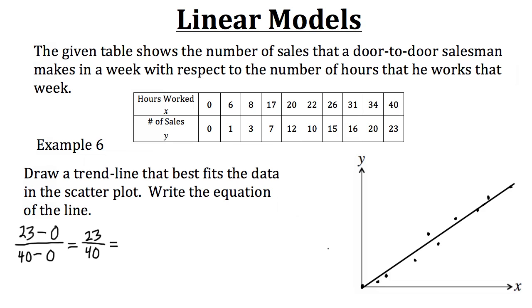Now a lot of times when working with scatter plots and trend lines, you're going to get an equation for a line that probably isn't going to work out very nicely. So for example, this 23 over 40, it's kind of a crazy looking slope. So let's just simplify it and make it into a decimal. So 23 divided by 40 would be roughly 0.58. So now that we have our slope, let's put it into an equation.